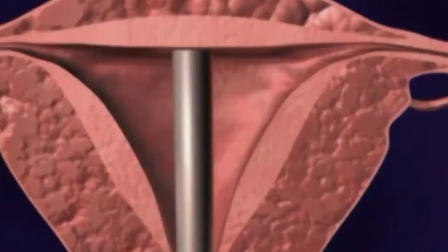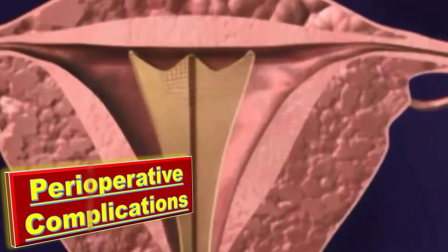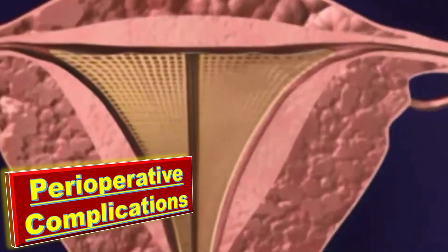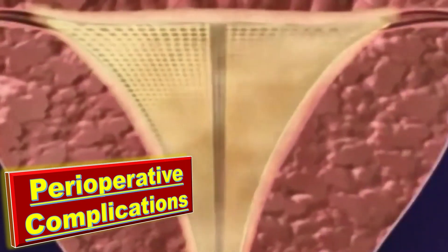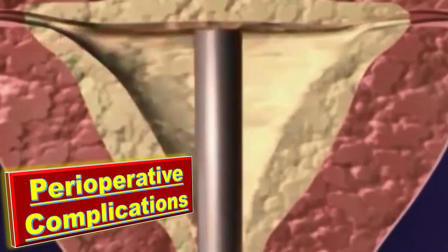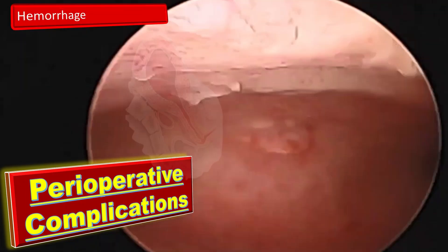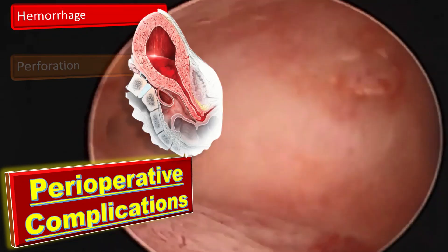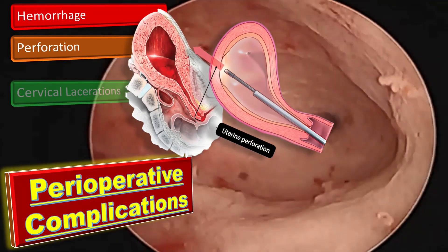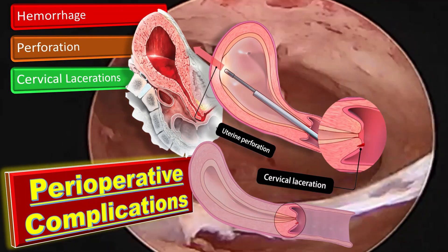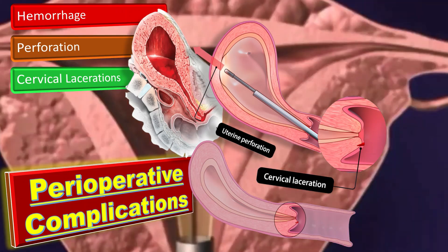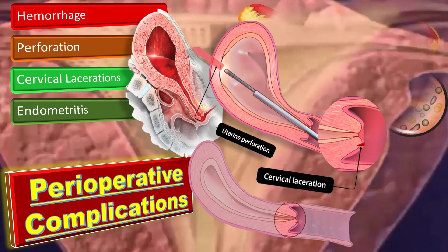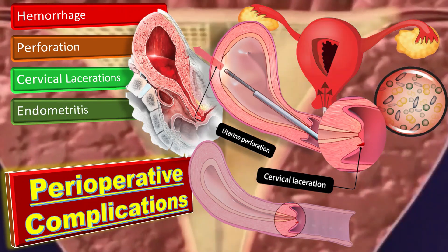The perioperative complications with first- and second-generation techniques include hemorrhage, perforations, and cervical lacerations, which occur in 0.2% of cases. Other complications include endometritis and hematometra.